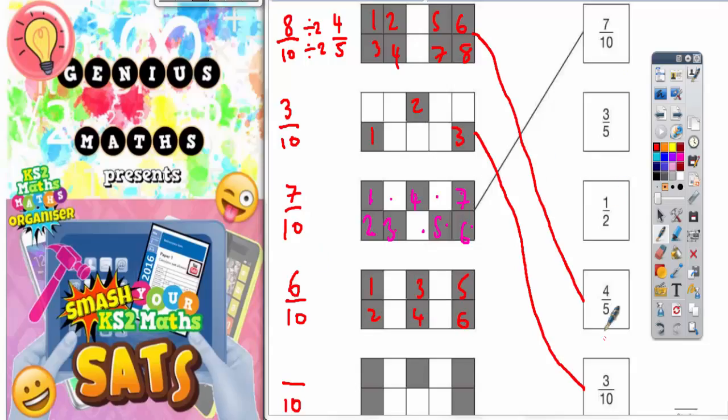Again 6 out of 10 isn't an option. But if we simplify this fraction to get an equivalent fraction, we're going to get 6 divided by 2 which is 3, 10 divided by 2 which is 5. So we have actually got 3 fifths. So 3 fifths is an equivalent fraction. So this one we get joined to 3 fifths.